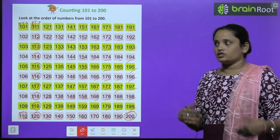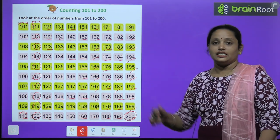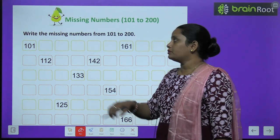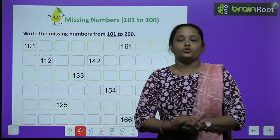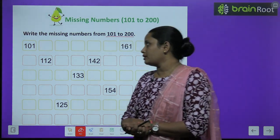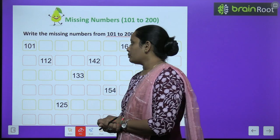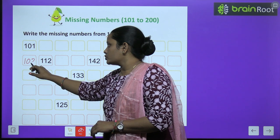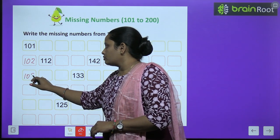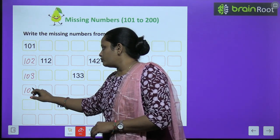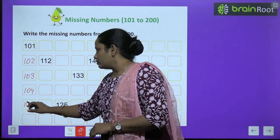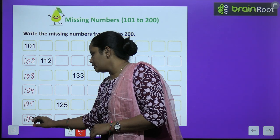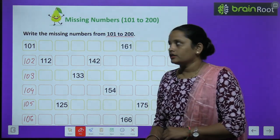Now, similarly, the counting above 200 we will do the same way. Now, let's write the missing numbers from 101 to 200. So we will fill in the missing numbers from 101 to 200. Here we will write: 101, 102, 103, 104, 105, 106, and so on.